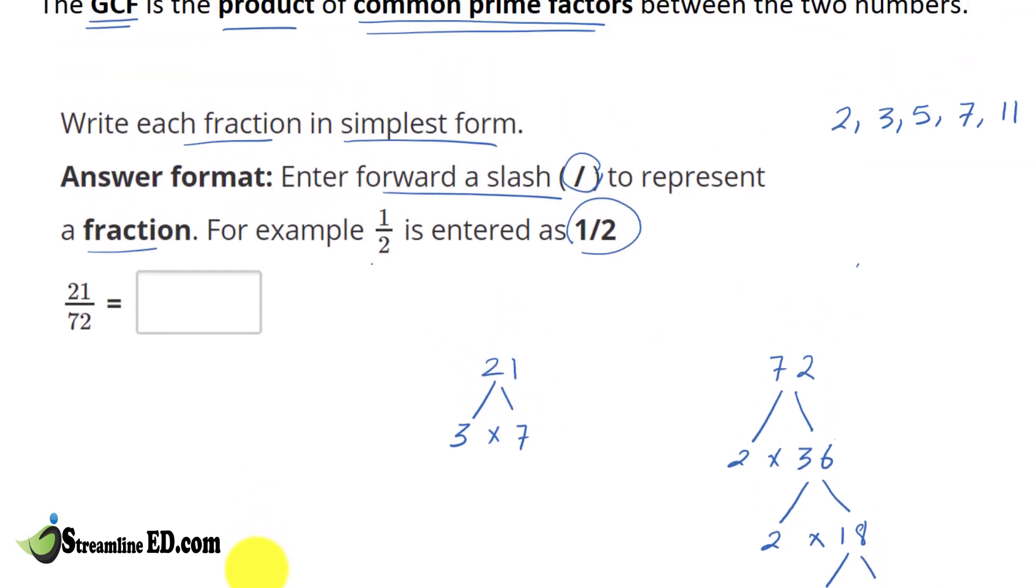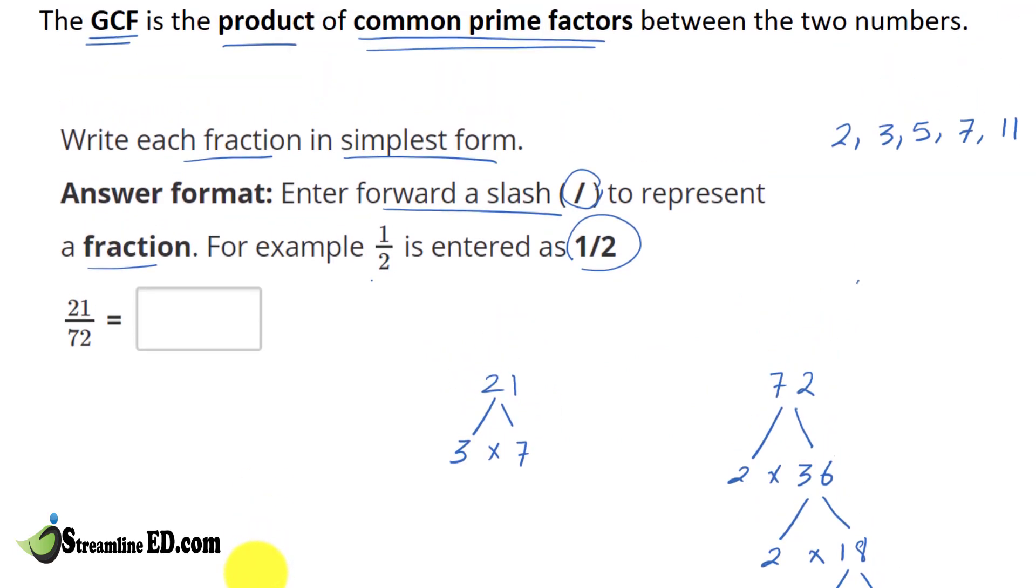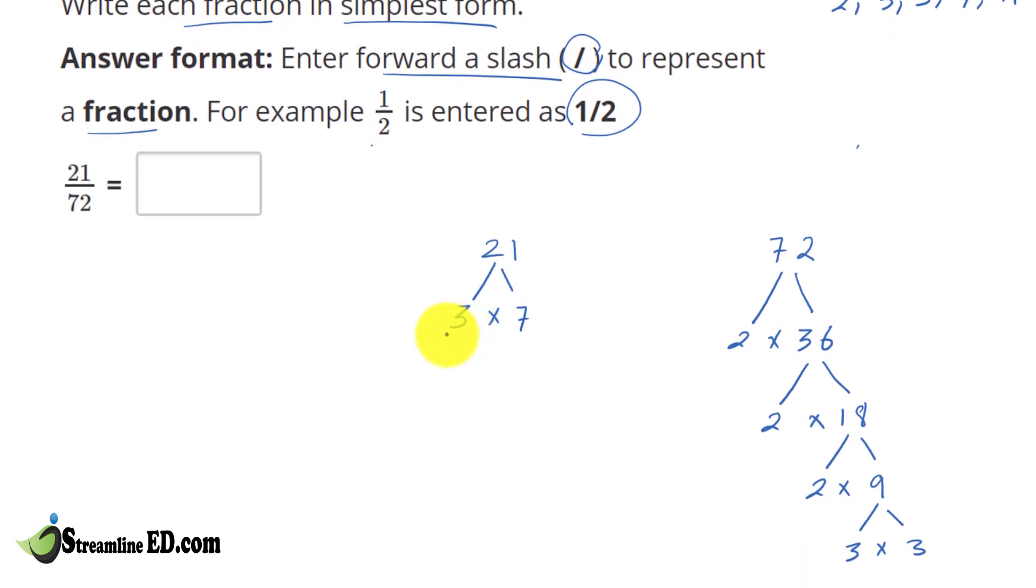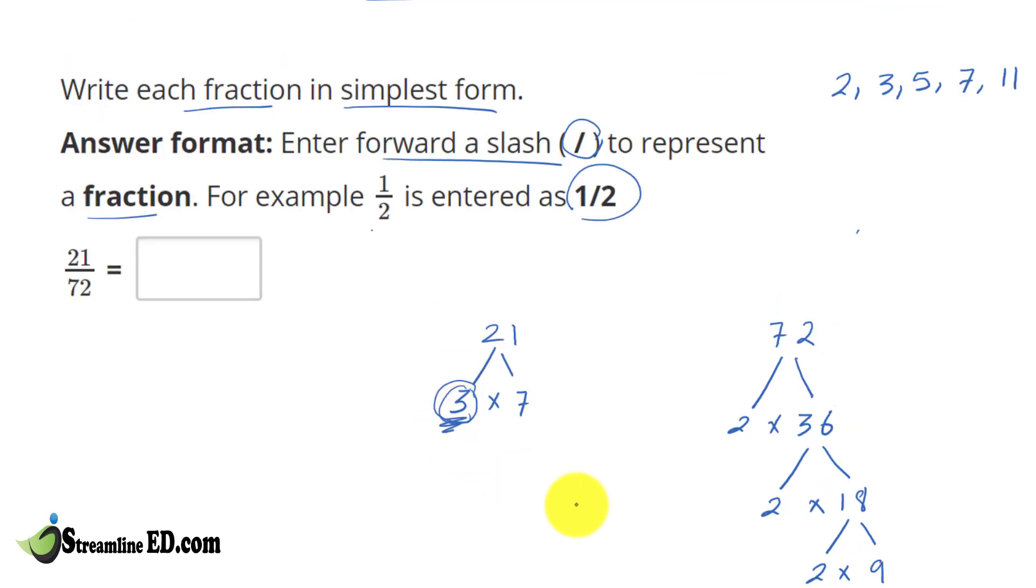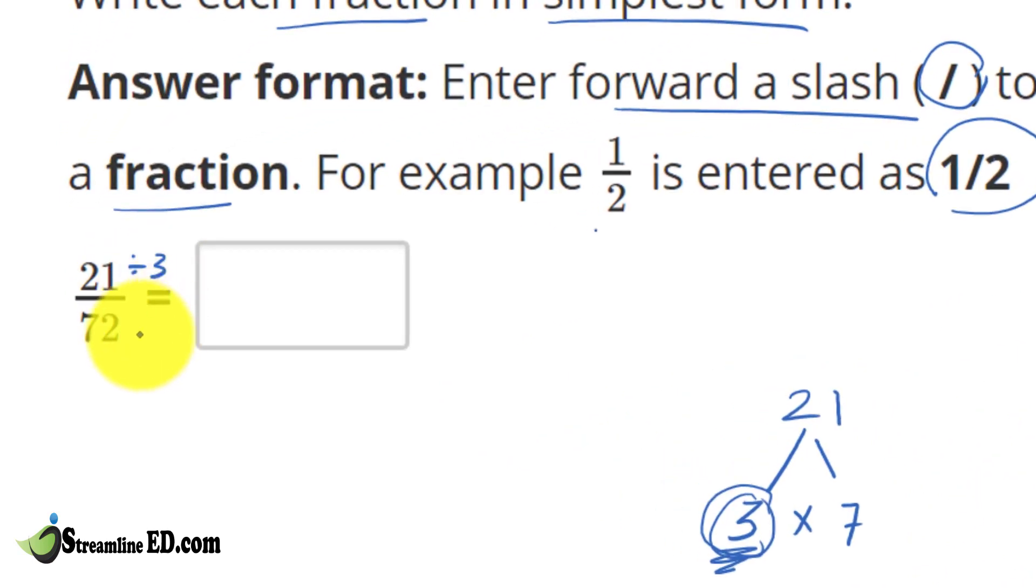So what is the common prime factor? Right away, we know this one has 3, and this one has 3. So what does that mean? In this case, we only have one common prime factor. So therefore, the greatest common factor must be 3. So if I take 21 divided by 3, and 72 divided by 3, what do we have? 21 divided by 3, that is 7. And 72 divided by 3, that turned out to be 24.